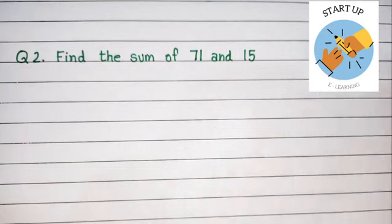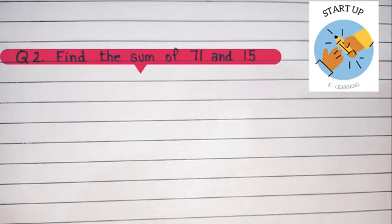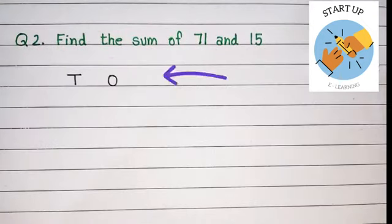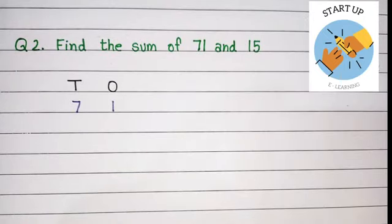Let's take one more example. That is, find the sum of 71 and 15. Before starting the sum, we will arrange them into proper columns, that is tens and ones. Take the first addend, that is 71. 1 will be written under the ones column and 7 will be written under the tens column.